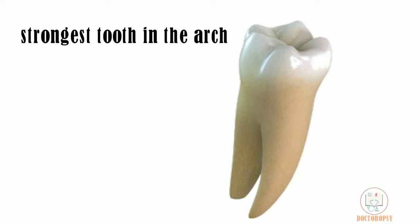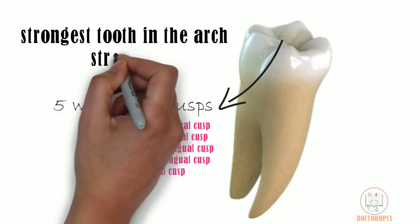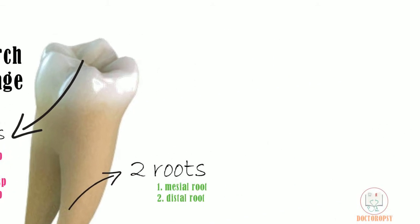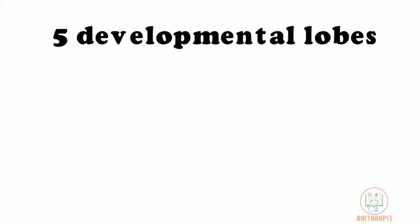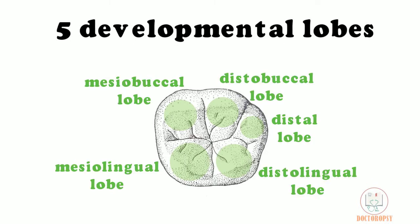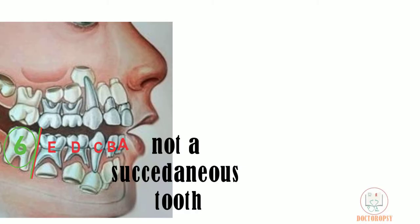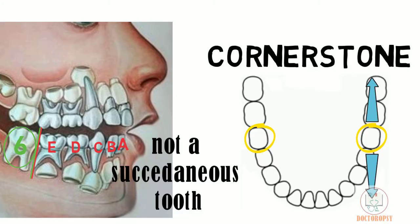It is the strongest tooth in the arch with 5 well-formed cusps and has strong anchorage with 2 roots. The mandibular first molar develops from 5 developmental lobes, one lobe for each cusp. Like all molars, it is not a succedaneous tooth, and like the maxillary first molar, it is also called the cornerstone of the arch.